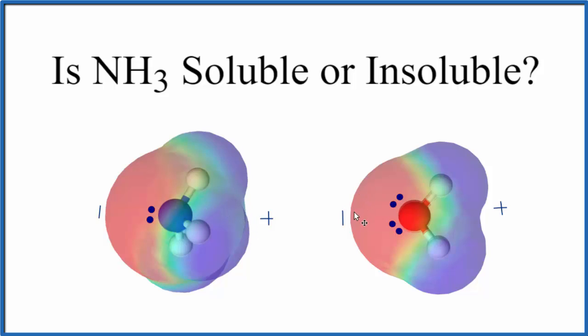In this case, because we have a nitrogen with hydrogens and a lone pair here, and over here you have water with lone pairs and hydrogens, we can have hydrogen bonding, which is a strong form of the dipole-dipole intermolecular forces between molecules. That means that ammonia is going to be very soluble in water.